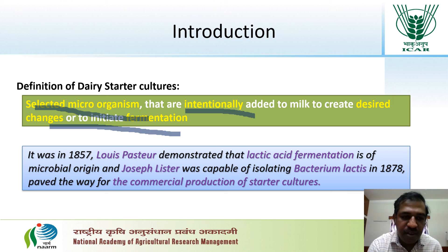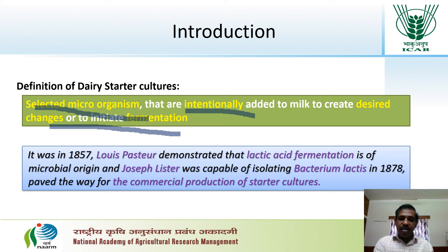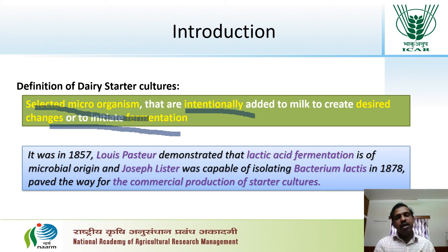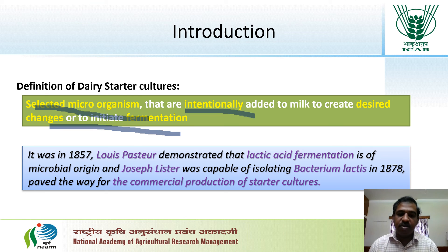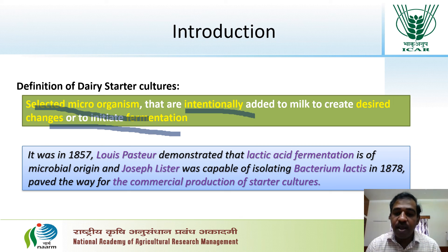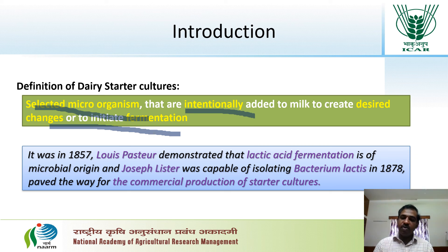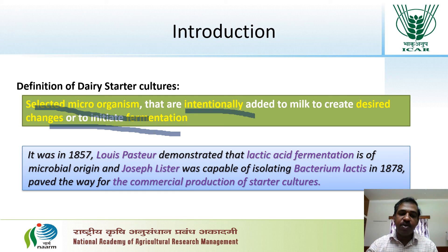Coming to the history: in 1857, Louis Pasteur demonstrated that lactic acid fermentation is of microbial origin. Later in 1878, Joseph Lister was successful in isolating lactic acid bacteria for the first time, and that was named as Bacterium lactis — presently known as Lactococcus lactis subsp. lactis.